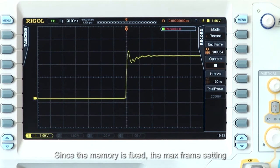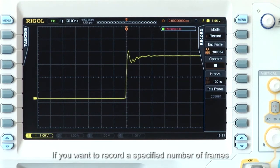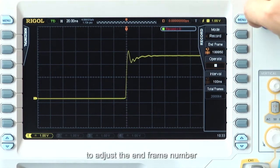Since the memory is fixed, the maximum frame setting depends on the acquisition memory depth setting. If you want to record a specified number of frames, use the multifunction knob or navigation knob to adjust the end frame number.